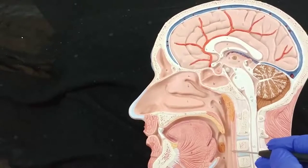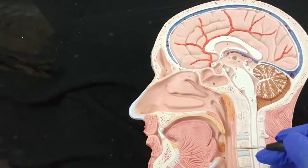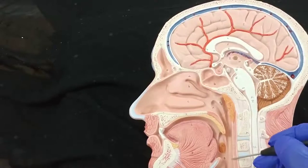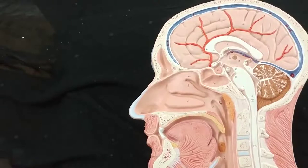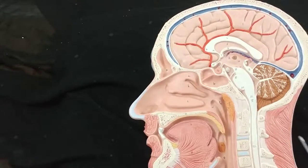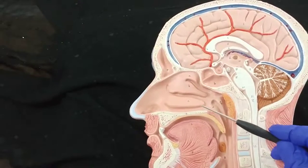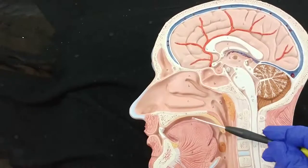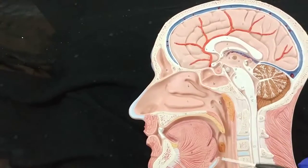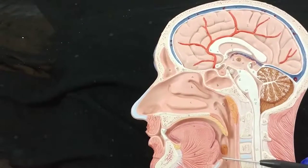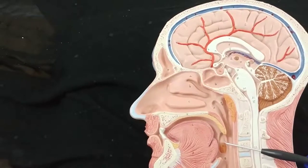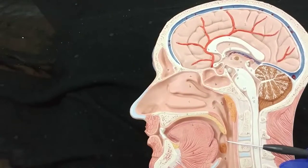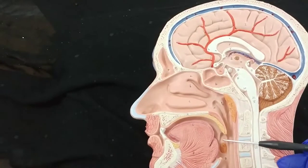These are the constrictor muscles of the pharynx — we have the superior constrictor, middle constrictor, and inferior constrictor. We will discuss those in another video. That's all about the structures in the nasal cavity, oral cavity, larynx, and pharynx. If you have any questions, please feel free to ask me. Please share the information with your friends and support my channel. Have a nice day. Bye now.